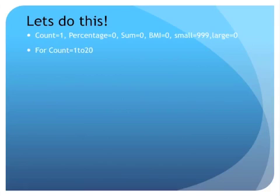Then we start off: FOR count=1 to 20. We input the BMI, and then we start the if statement. If BMI is more than or equal to 30, then sum=sum+1.